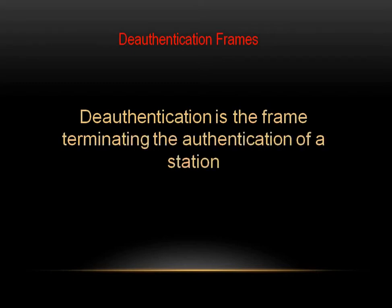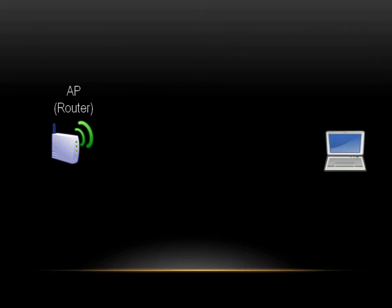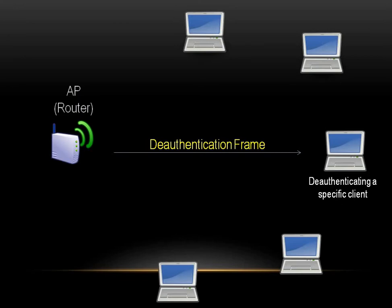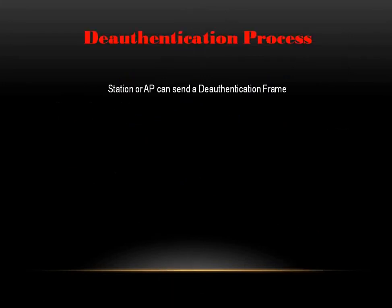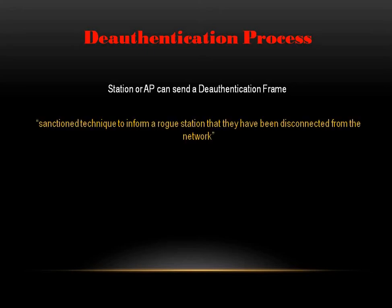Let's just talk about the de-authentication frame. De-authentication is the frame terminating the authentication of a station. In a wireless network, when an access point wants to terminate a session to a specific client or station, it sends a de-authentication frame to the connected client. An AP can also send a de-authentication frame to all of its connected stations for terminating sessions by broadcasting. A station or AP can send a de-authentication frame when all communications are terminated. Sending the frame from the access point to a station is called a sanction technique to inform a rogue station that they have been disconnected from the network.